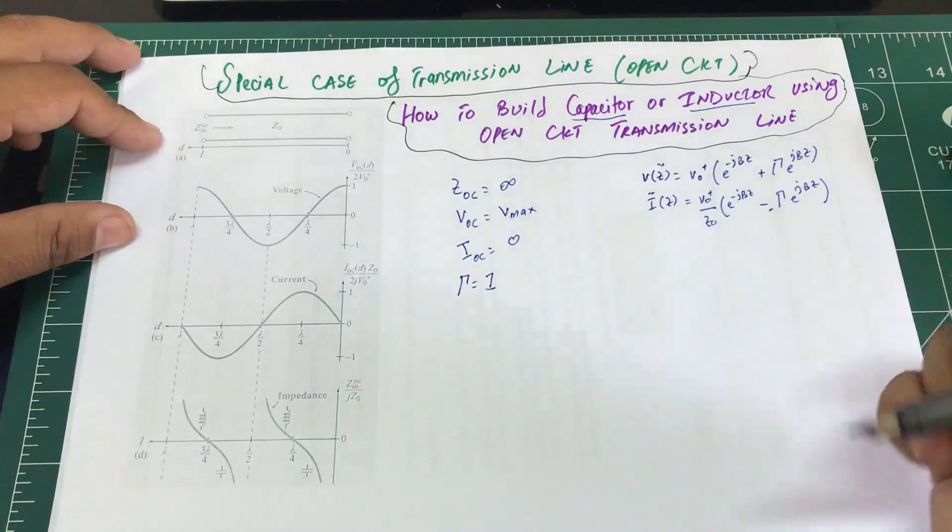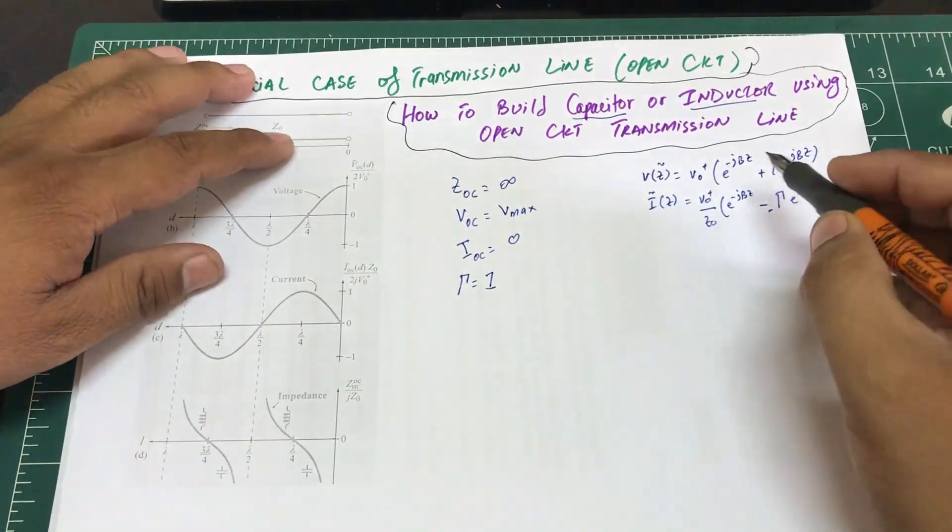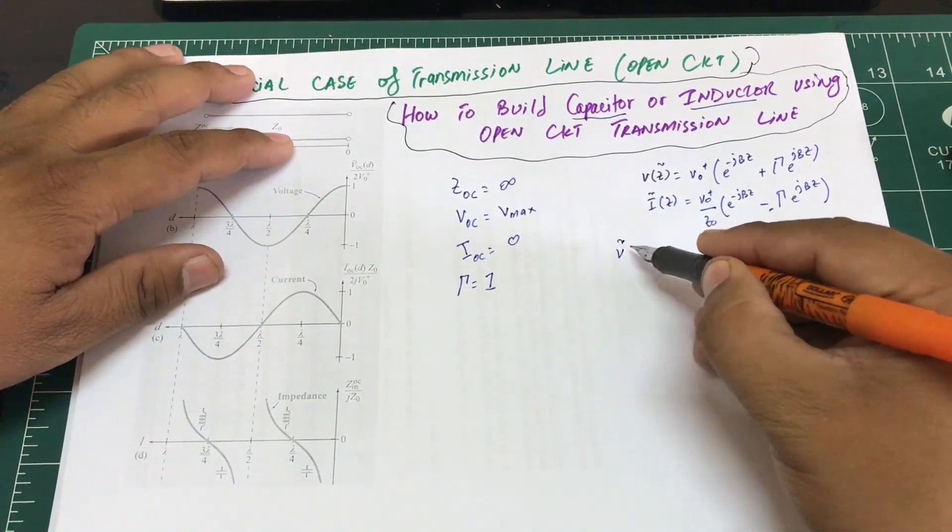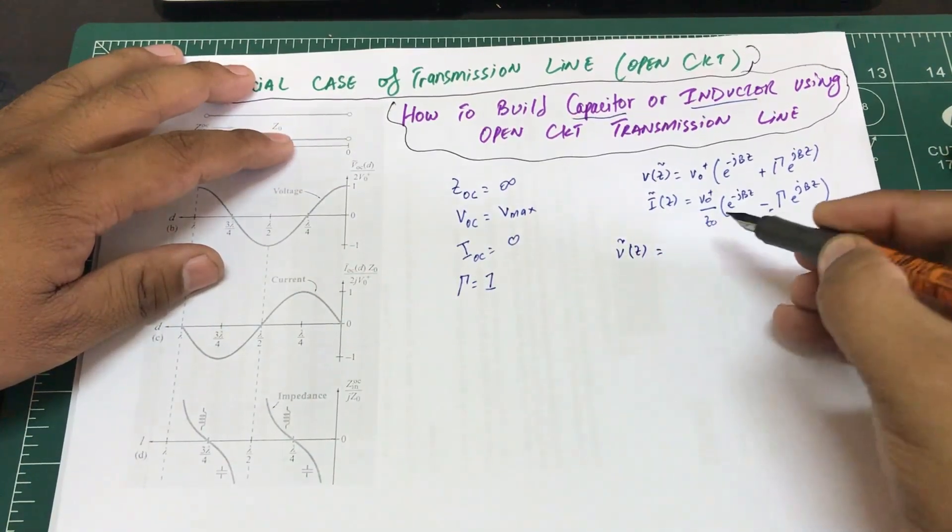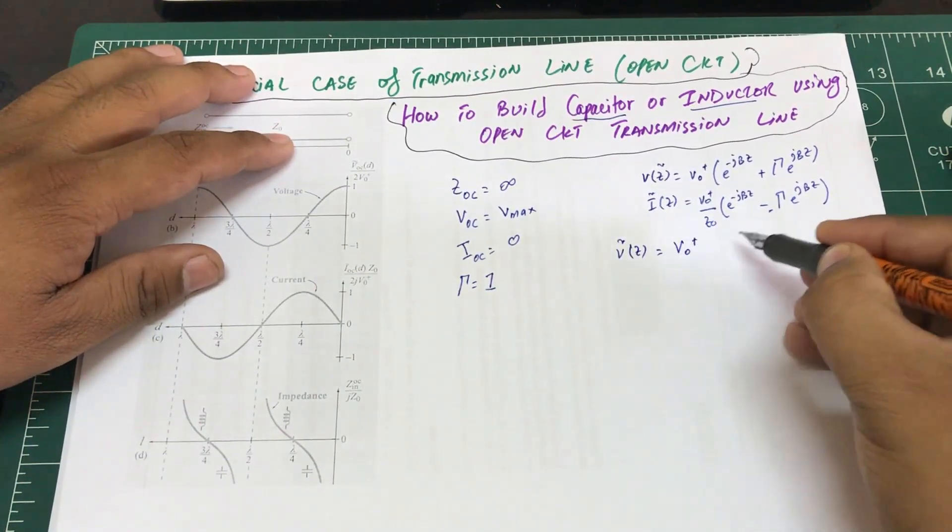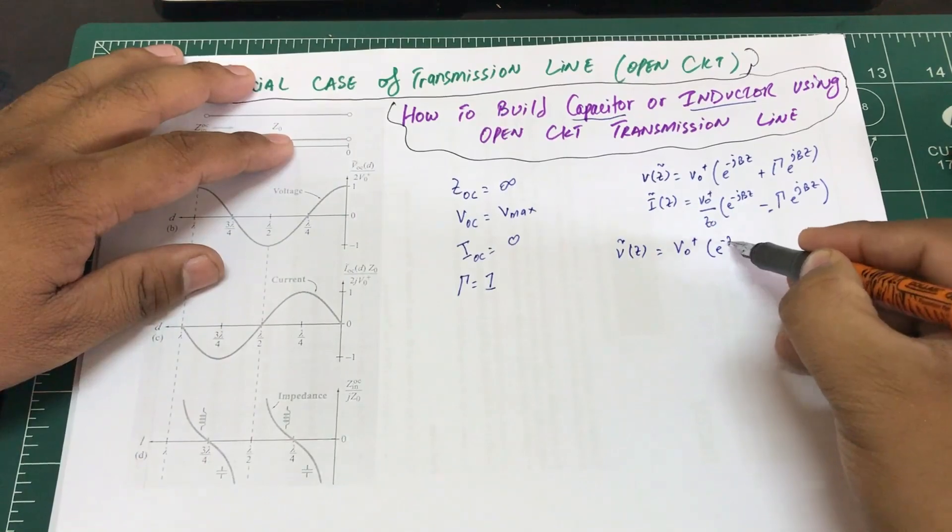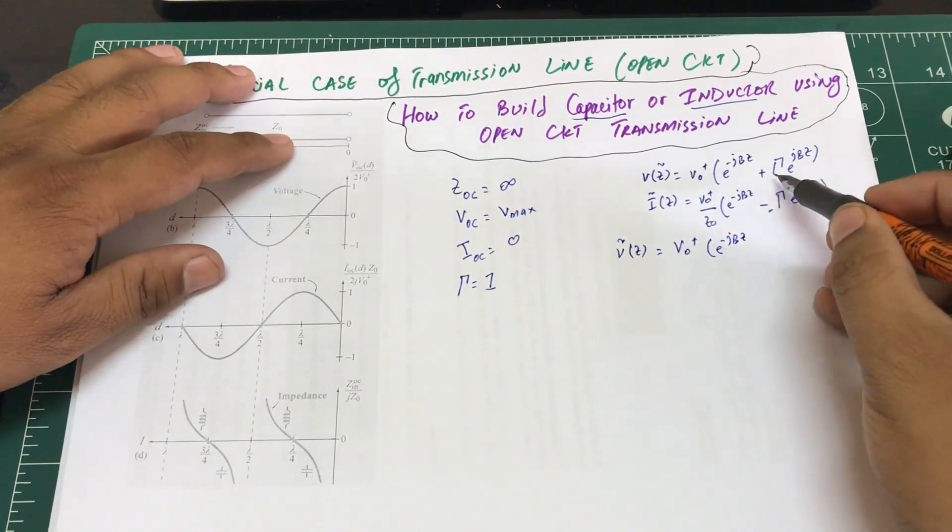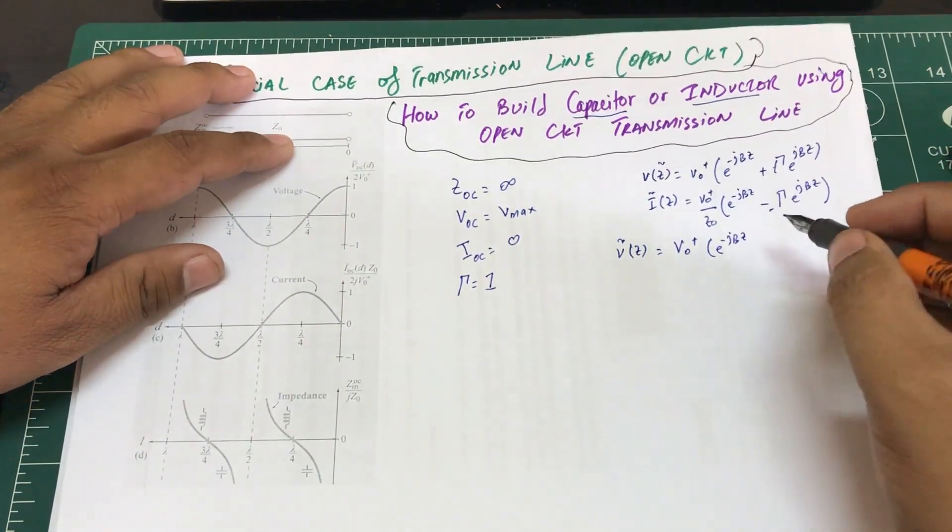In place of this reflection coefficient, I'm going to do the same thing. So V(z) is going to be V₀⁺e^(-jβz) - this is positive one, so this will remain unchanged as e^(jβz).